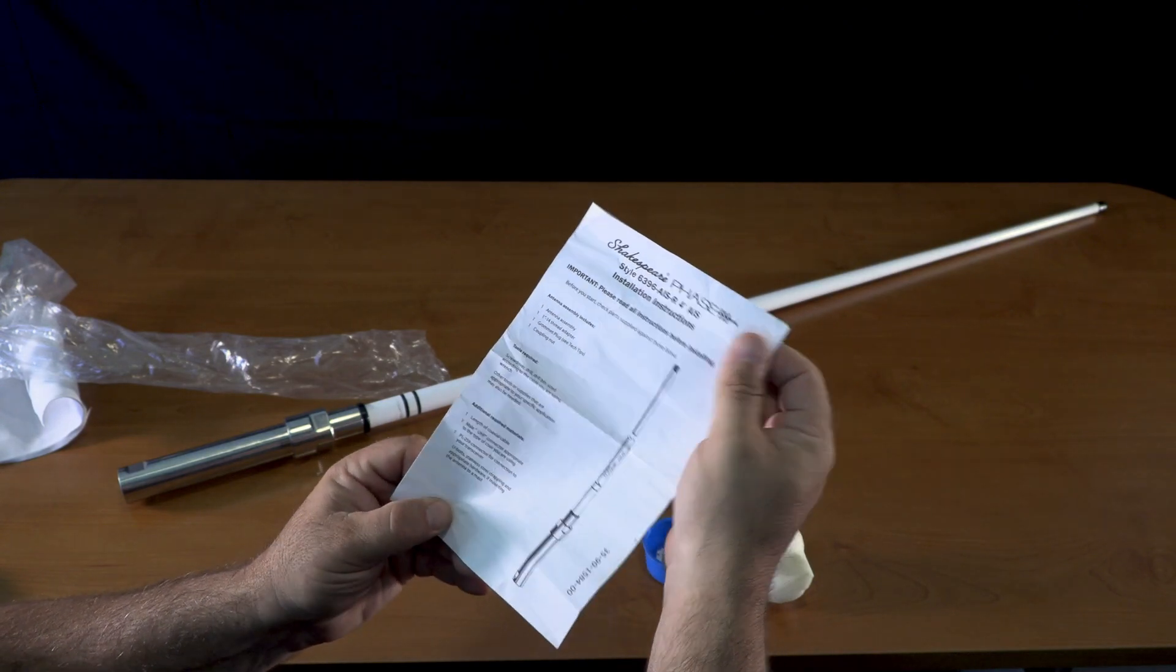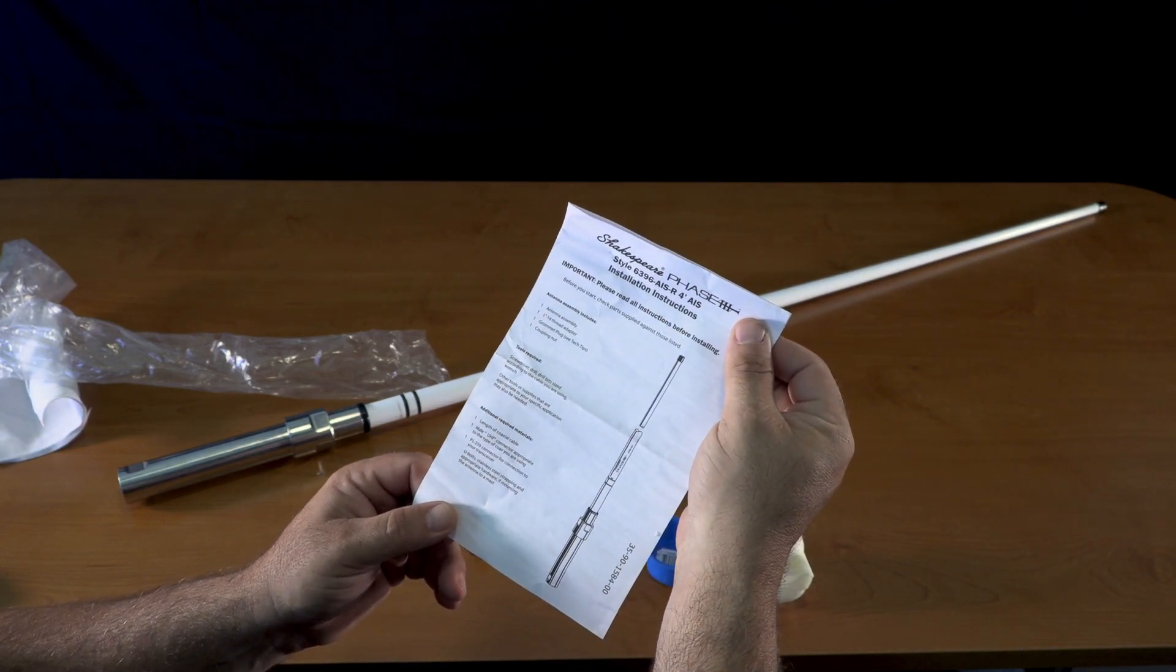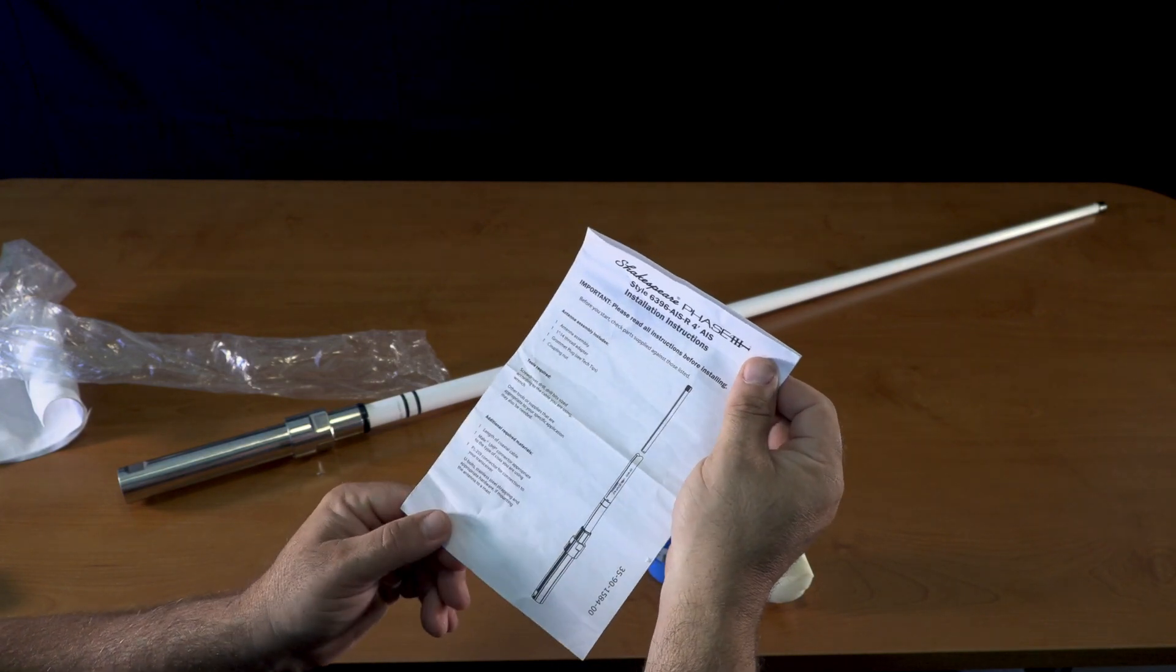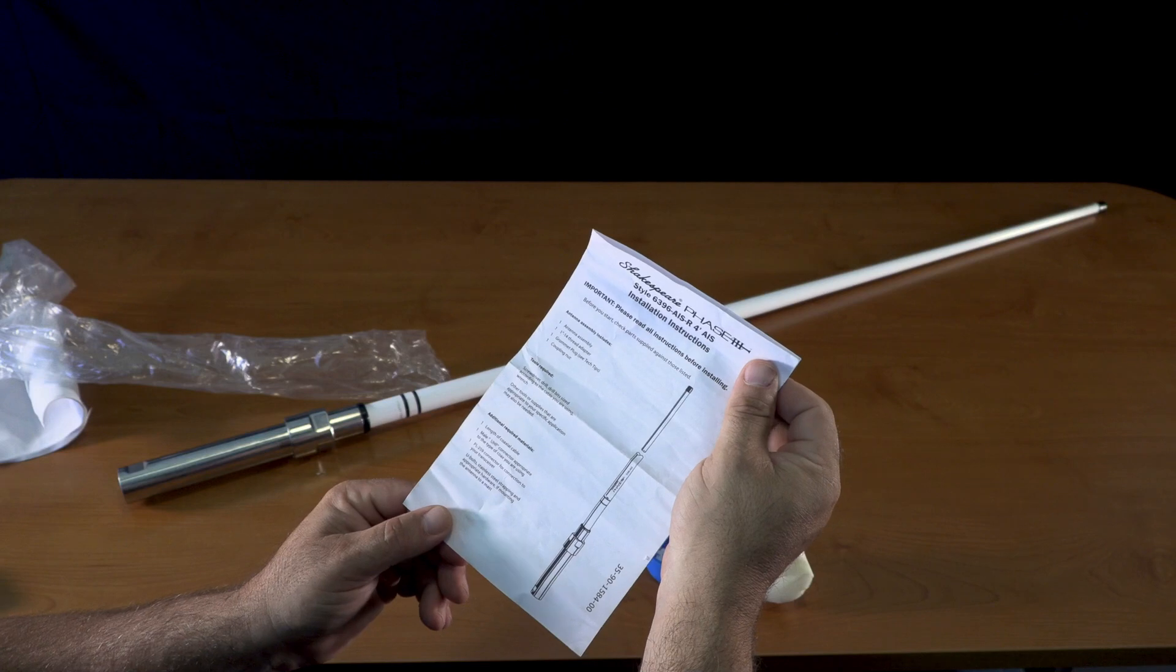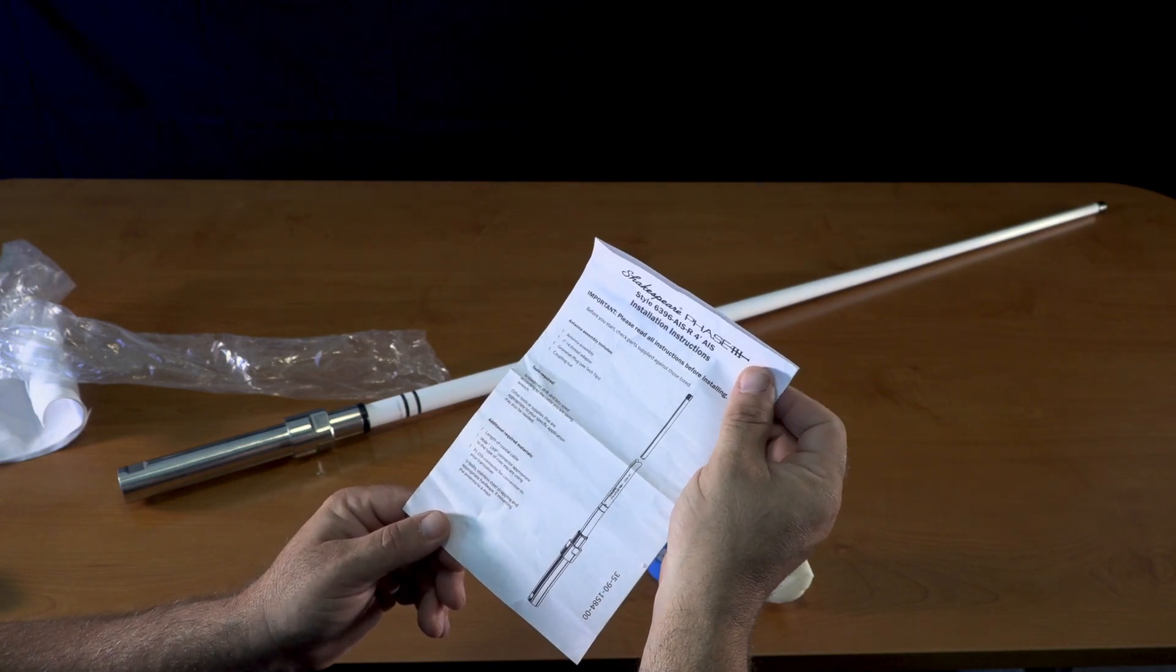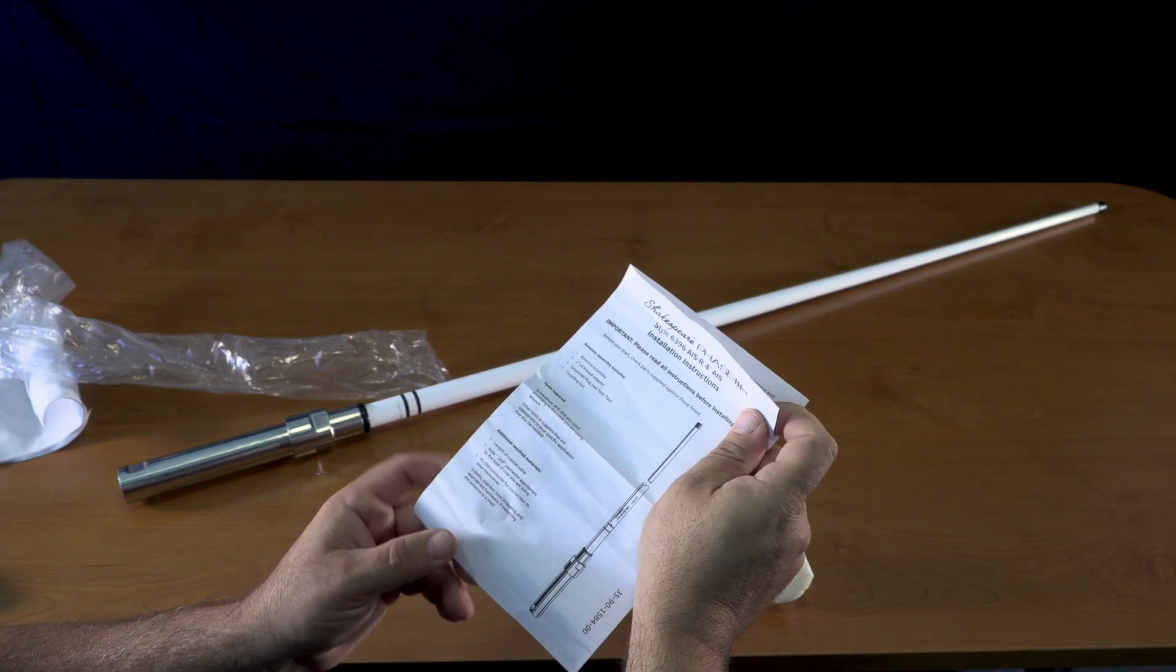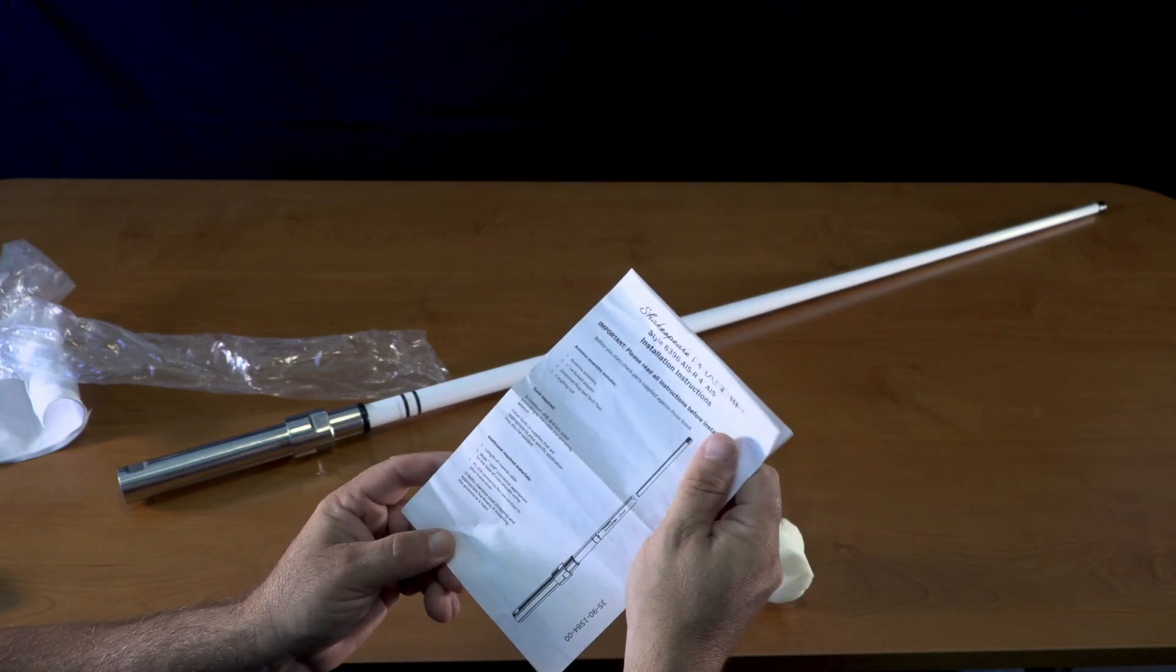You'll need a male UHF connector appropriate to the type of coax you are using, a PL-259 connector for connection to your transceiver, and stainless steel wiring.